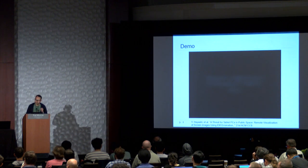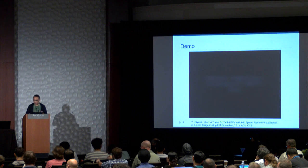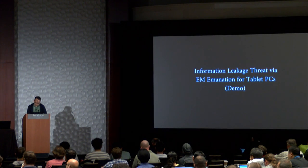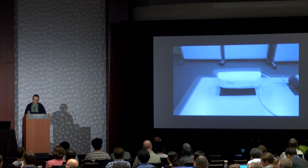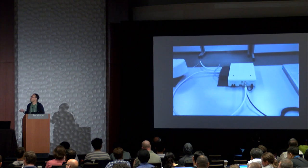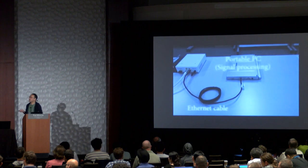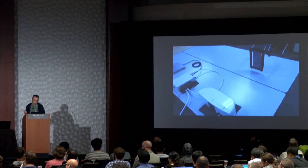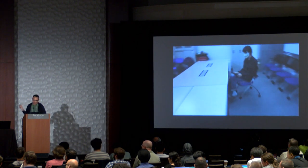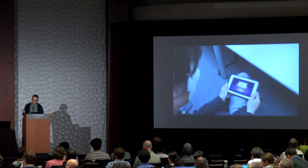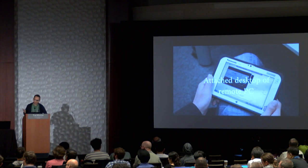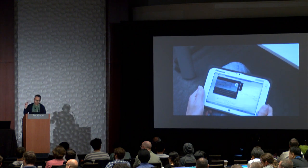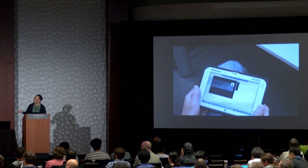The EM leakage from a tablet display was observed and the screen information was reconstructed. This is a chip antenna. This is an SDR. This is a signal processing PC. This is the target device — this antenna observes leakage information using EM. The attacker's monitor is connected to the signal processing PC using remote desktop.